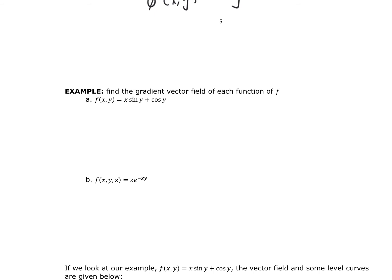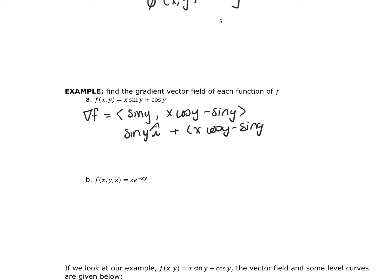For finding the gradient vector field, this is just like we expect from section 4.6 — it's literally finding the partial derivatives with respect to x, y, and z. The partial with respect to x gives sin(y), since cos(y) is treated as a constant. The partial with respect to y gives x·cos(y) - sin(y). So the gradient is sin(y)i + (x·cos(y) - sin(y))j, or written either way — these are the same thing.